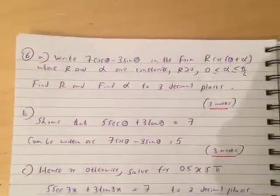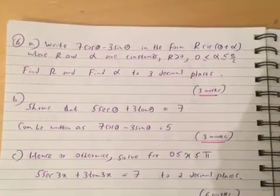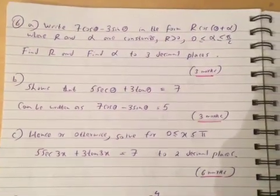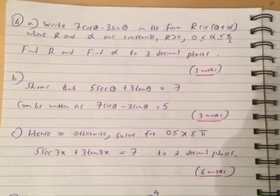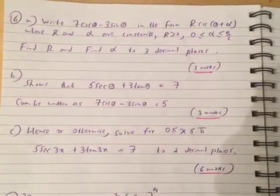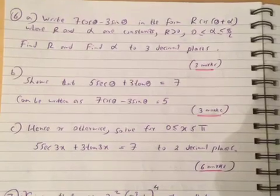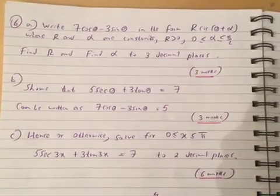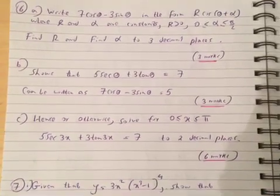Question 6: Write 7 cos theta minus 3 sin theta in the form r cos theta plus alpha, where r and alpha are constants, r greater than 0, alpha between 0 and pi over 2. Find r and find alpha to three decimal places.